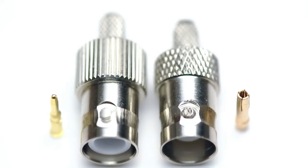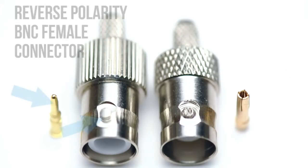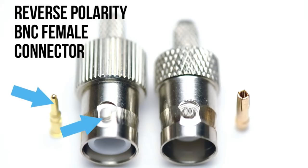On the right, we have a standard BNC female connector. It has the two lugs making it female, and it has a female pin — therefore it is a standard female connector. On the left, we have a reverse polarity BNC female connector. It has the two lugs identifying it as female, and it has a male pin — therefore it is reverse polarity.